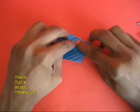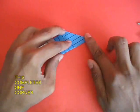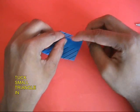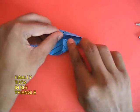You will see a small triangle, tuck it inside and then tuck the big triangle also in. Do the same thing on the other side. Open it and tuck the little triangle and then the big triangle inside.